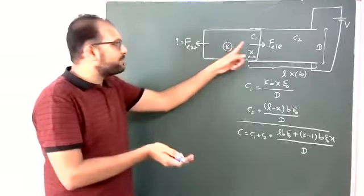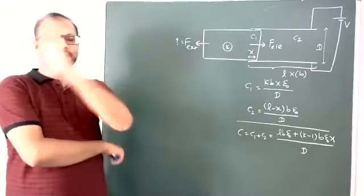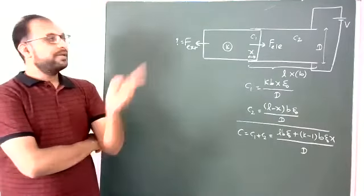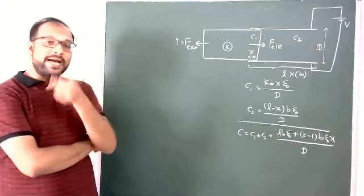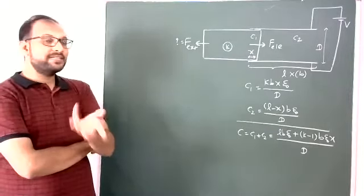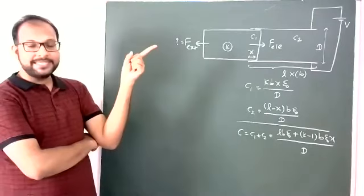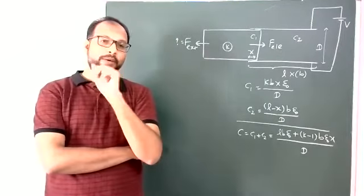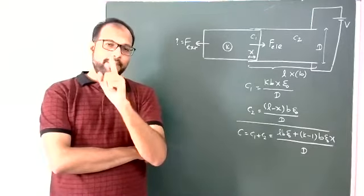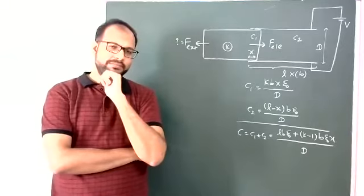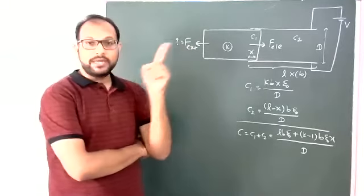Students, for a small displacement of this dielectric slab, there is a change in capacitance. When capacitance changes, charge also changes. Who is supplying the charge? The battery is supplying it. That means here there are two types of work conducted: number one, work done by the external agent, that is mechanical work; another is work done by the battery.